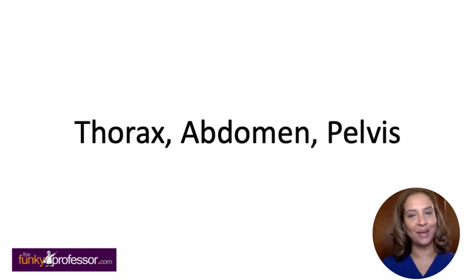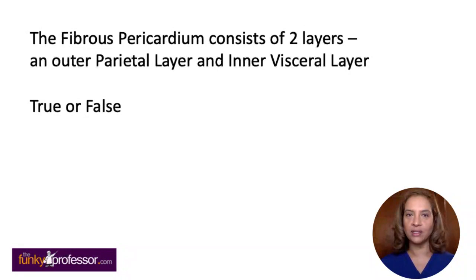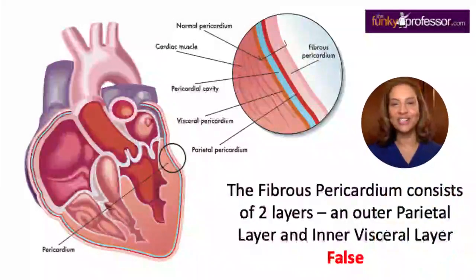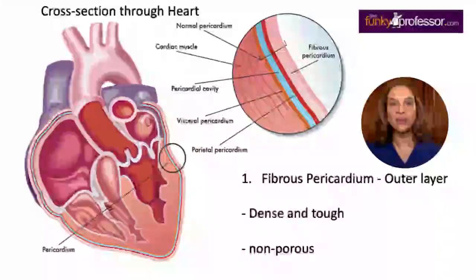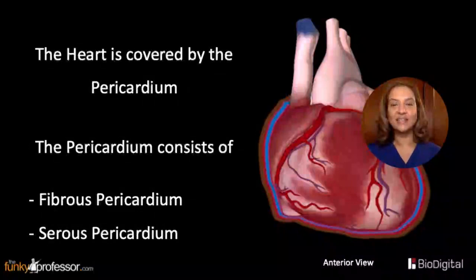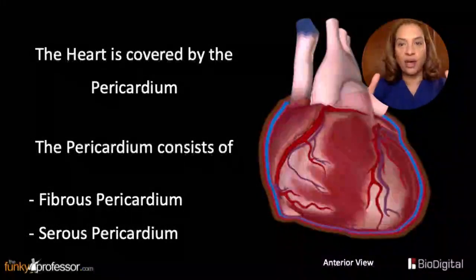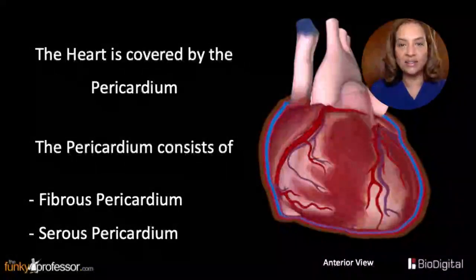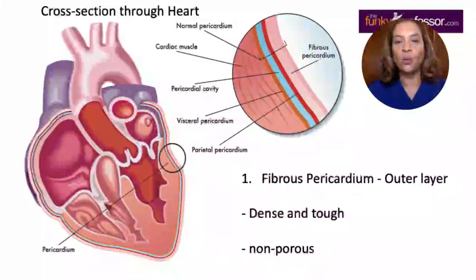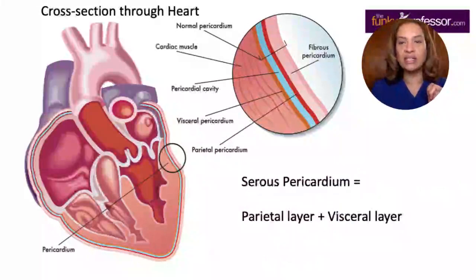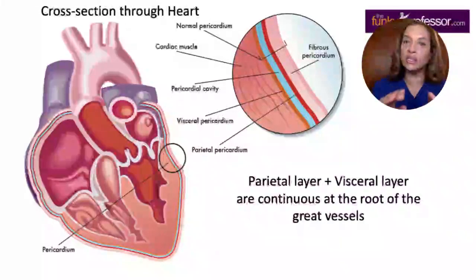Moving on to the thorax, abdomen and pelvis. The fibrous pericardium consists of two layers — an outer parietal layer and an inner visceral layer. Is that true or false? The answer is false. It's actually the serous pericardium that has the two layers. The pericardium has an outer fibrous layer which is very thick, and the inner serous pericardium has a parietal layer and a visceral layer. The visceral layer is closely adherent to the heart, and these two layers are continuous at the root of the great vessels.